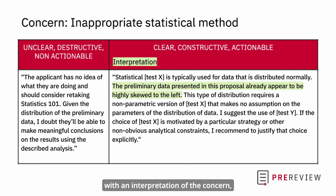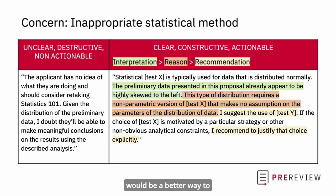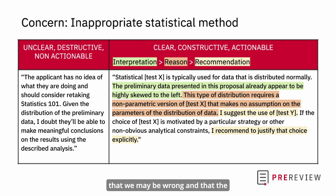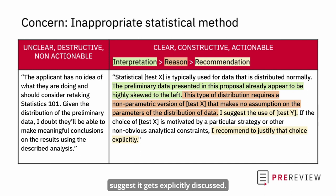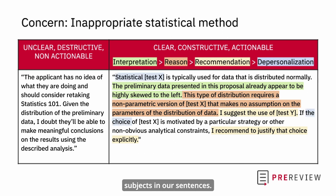This example starts with an interpretation of the concern, presents the reason why we think it is one, and ends with a recommendation around what we think would be a better way to analyze the data. We also approach this feedback with humility, understanding that we may be wrong and that the applicant's choice may be guided by a particular strategy, in which case we suggest it gets explicitly discussed. Finally, we avoid calling out the applicant as the actor of the issue by depersonalizing our argument and using the statistical test, or the choice, as subjects in our sentences.